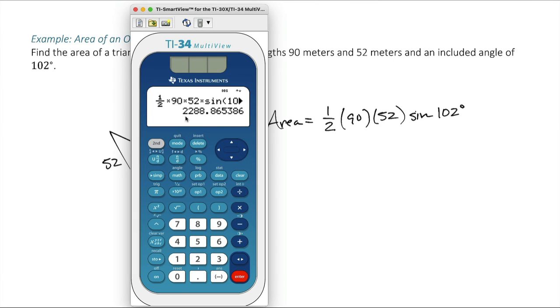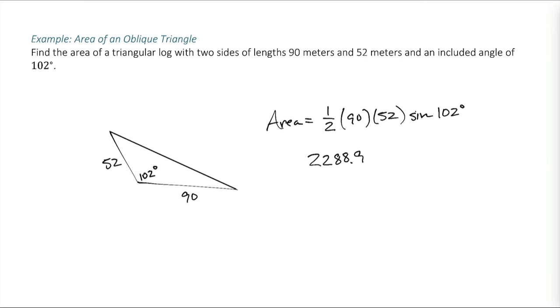I'll go ahead and round to one decimal place. 2288.9. 2288.9. And this is an area. Our measurements here were in meters, so this is in square meters.